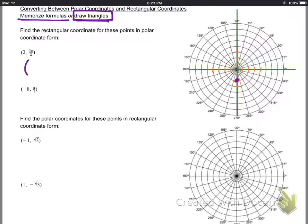And so we don't even have to draw triangles, we just write down it's 0 comma negative 2, it's right on the axis. Pretty straightforward.